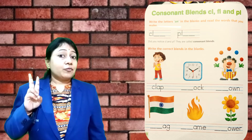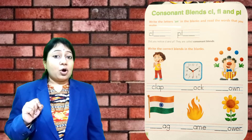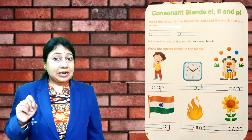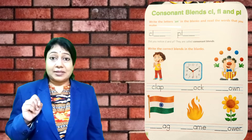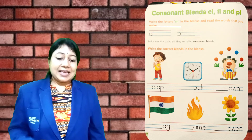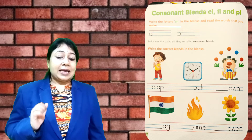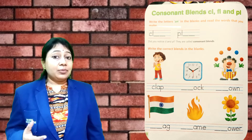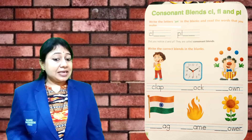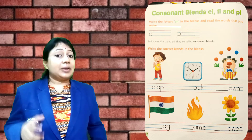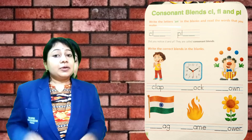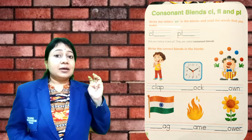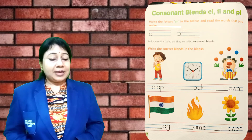Now next is clock. So here, clock: C, L, O, C, K. What blend goes at the start? C, L — clock. Now next is cloud: C, L, O, W, N — cloud. So my dear kids, you have to complete the rest of the three pictures.